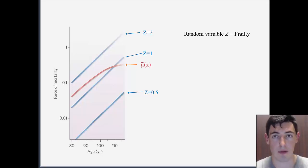On the red line of the graph, we observe the force of mortality for the entire population. This is denoted by the mathematical notation mu bar.